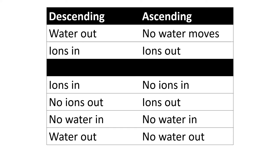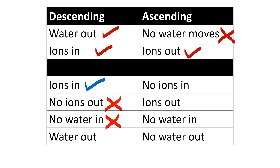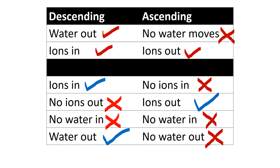This slide summarises what was described. In the descending limb: water moves out, ions move in - but ions cannot move out and water cannot move in. In the ascending limb: no water moves in or out, and ions can move out but cannot move in.